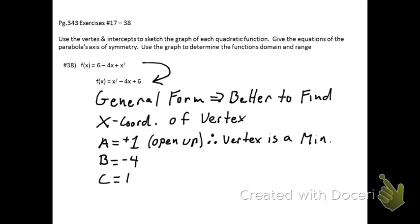Now a is positive 1, so that means this is going to open upwards. That's going to be useful to us. That will determine that the vertex is a minimum. So let's go ahead and use negative b over 2a, and we find this x-coordinate of the vertex is equal to 2.